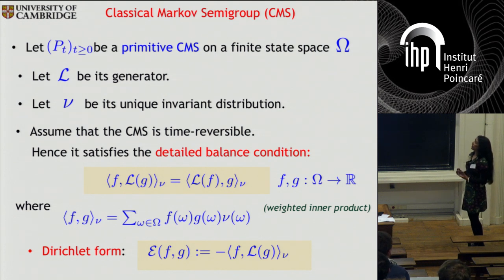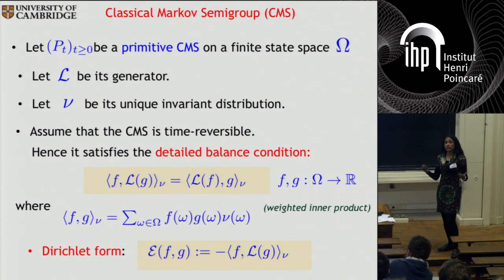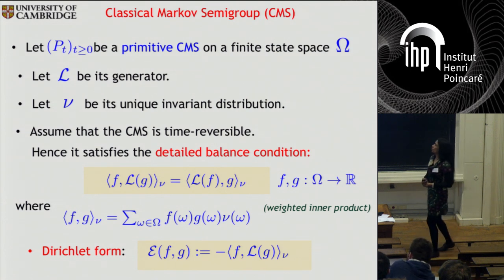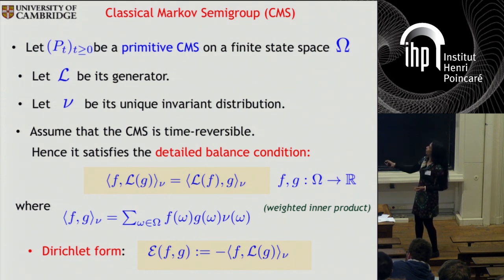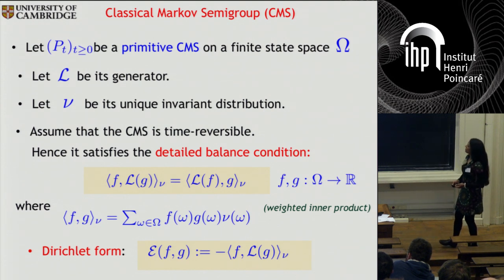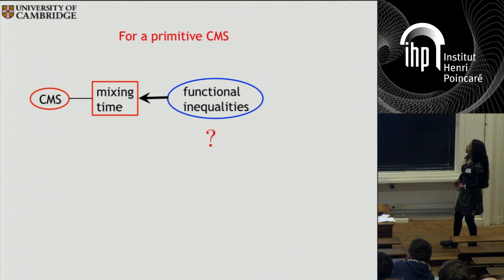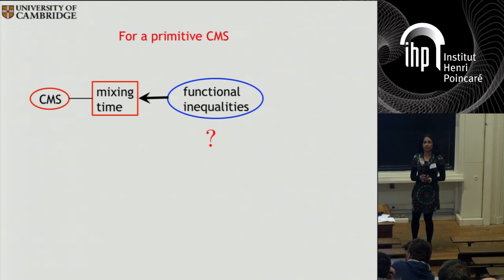Another quantity one can associate to a classical Markov semigroup, which completely characterizes it, is the so-called Dirichlet form. The Dirichlet form is defined in terms of this weighted inner product. The study of functional inequalities is a vast subject. For the purpose of this talk, I'm going to consider just two particular functional inequalities in two very specific forms, and in the context of a primitive classical Markov semigroup.